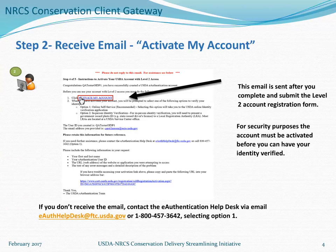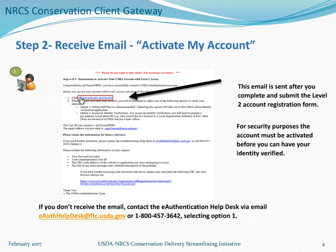If you haven't received the email, check your spam or junk mail folder, as sometimes it goes there. If you still don't receive the email, contact the eAuthentication Help Desk via email at eauthhelpdesk@ftc.usda.gov, or call them at 1-800-457-3642, selecting Option 1.